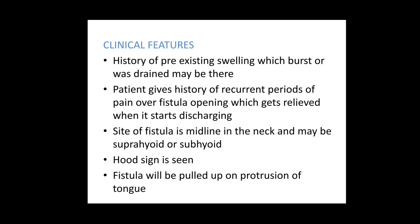Clinical features include a history of a pre-existing swelling which either burst or was drained by a surgical procedure. The patient gives a history of recurrent episodes of pain near the opening of the fistula, which gets relieved once it starts discharging. The site is usually midline in the neck, either suprahyoid or subhyoid. The hood sign is seen. One characteristic feature is that the fistula gets pulled up on protrusion of the tongue — a dimpling or pulling sensation at the opening is observed.